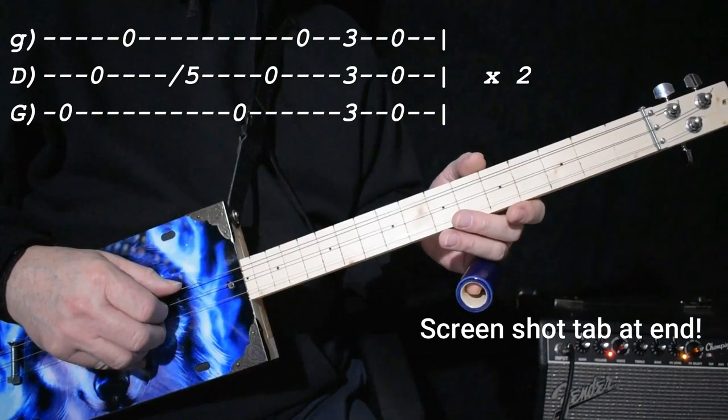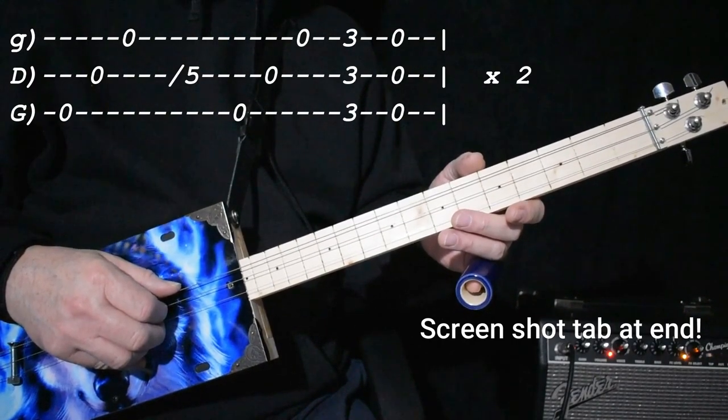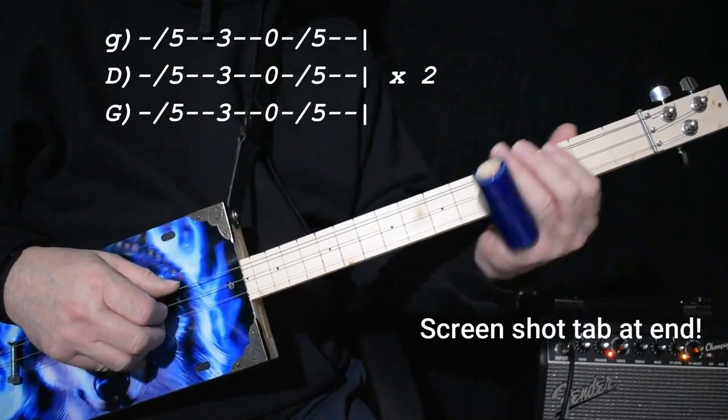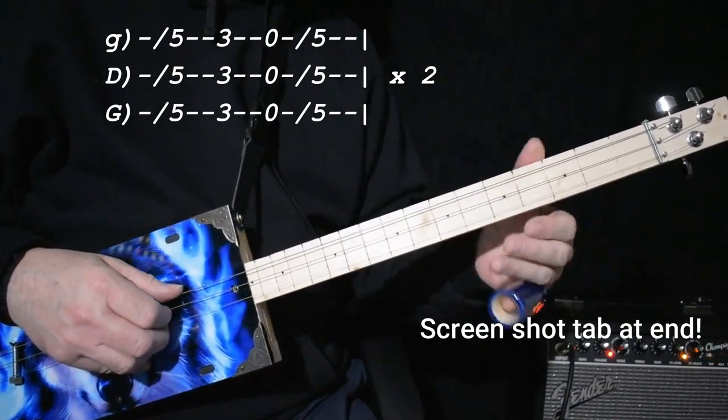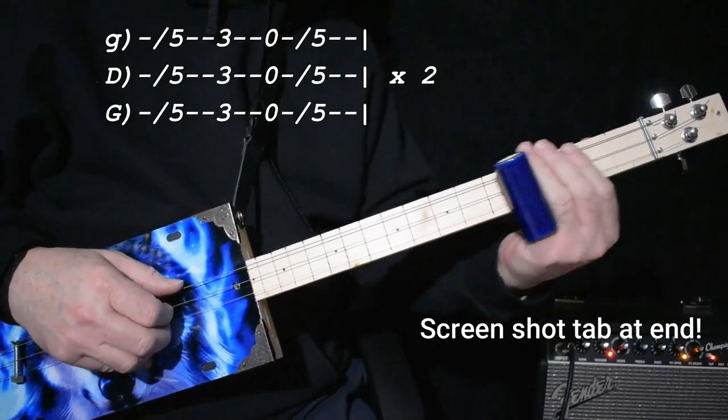So you do that, and then you go to the four chord, which is C, and it's on the fifth fret. So that's five, three, zero, five.